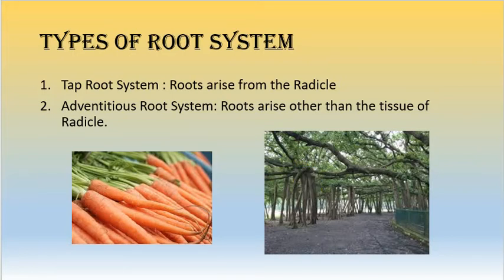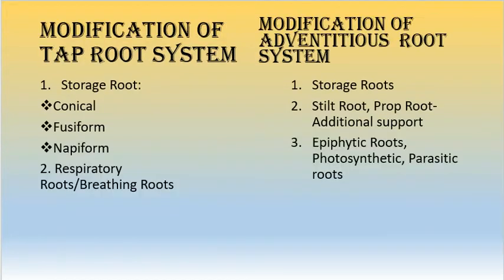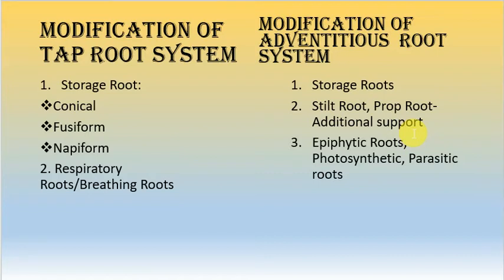Now we will study the modifications of the root system. Both the taproot system and the adventitious root system can modify themselves to perform secondary functions. The taproot system can modify itself for storage and for breathing or respiratory purposes. The adventitious root system modifies for storage, additional support, epiphytic, photosynthetic purposes, and to establish parasitic relationships with the host plant.